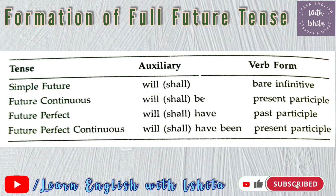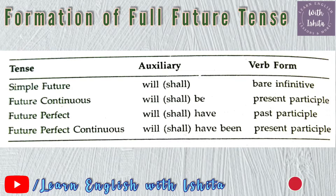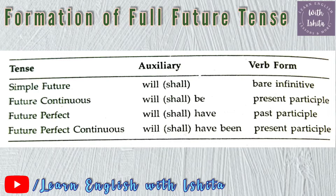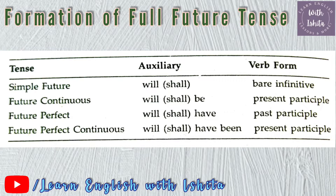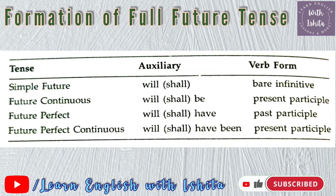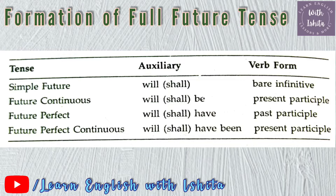Let's look at a summary table of all future tense formations. Number one, simple future: auxiliary is 'will' or 'shall', verb form is infinitive. Number two, future continuous: auxiliary is 'will/shall be', verb form is present participle (verb + -ing). Number three, future perfect: auxiliary is 'will/shall have', verb form is past participle (third form). Number four, future perfect continuous — which we are learning now: auxiliary is 'will/shall have been', verb form is present participle (verb + -ing).